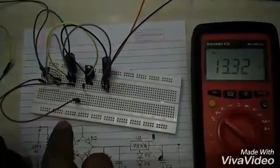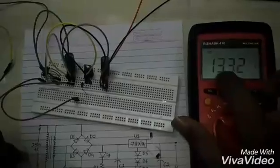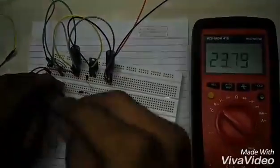Then whenever we add one another diode, output voltage also increases. See here, it's 13.98.